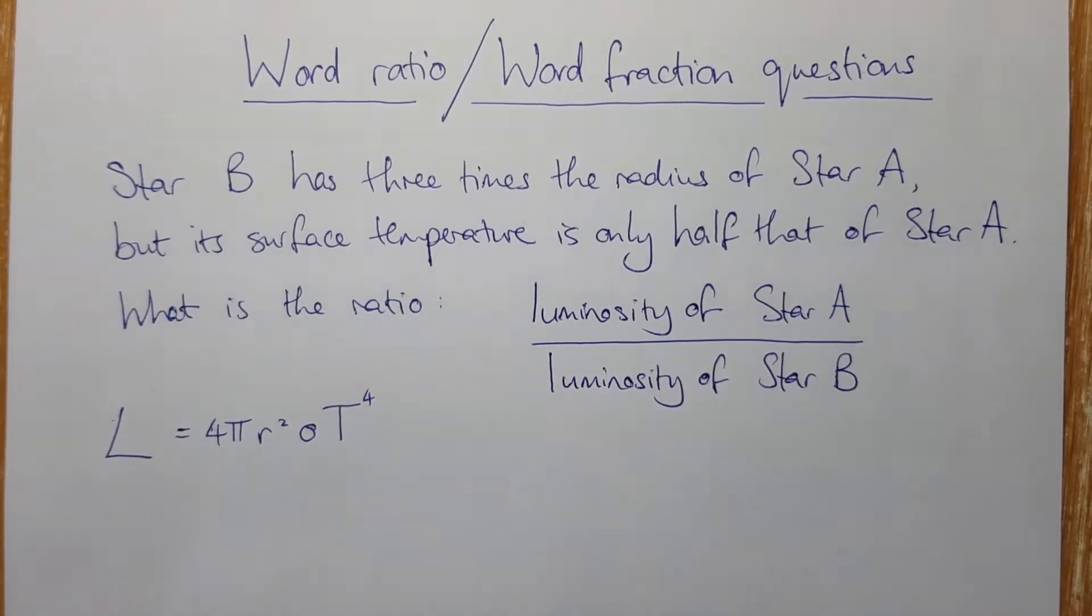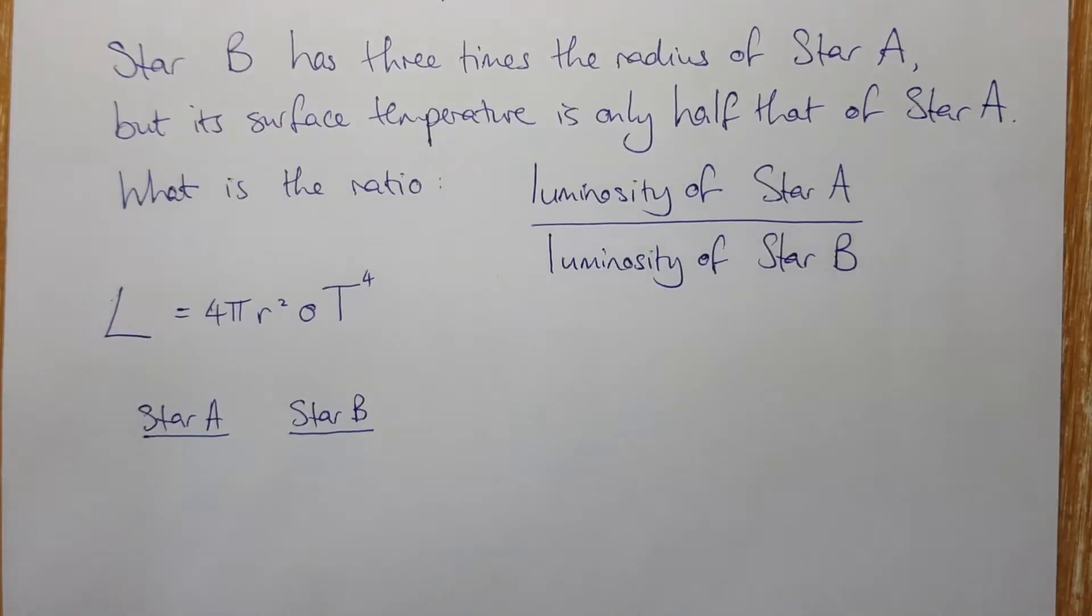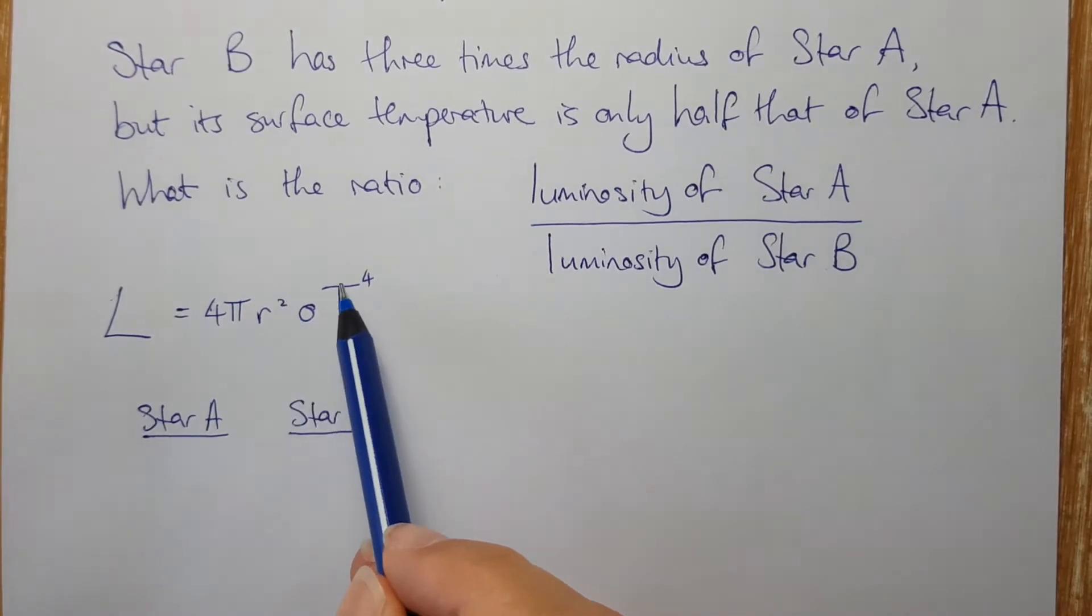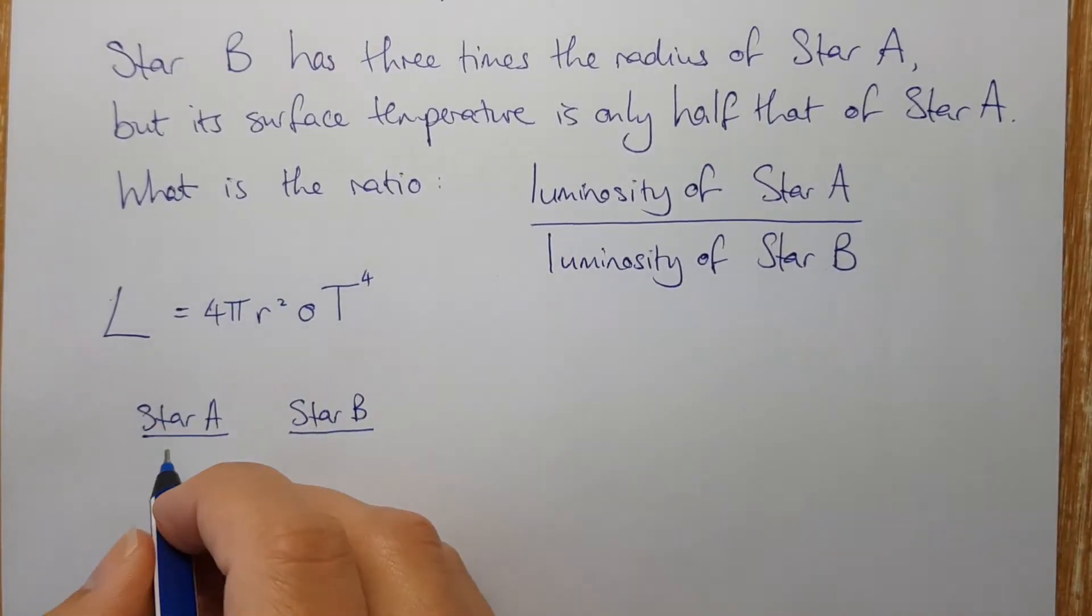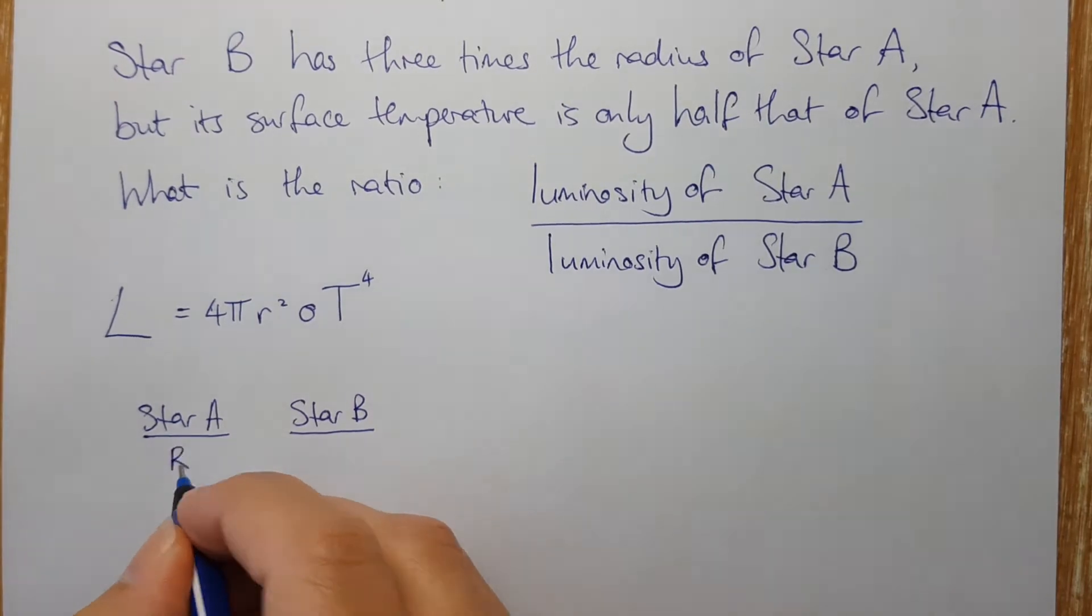The next thing you do is you list for the two stars the variables in here. The variables here are the radius of the star and the temperature. We are going to say for star A, its radius is capital R and its temperature is capital T.